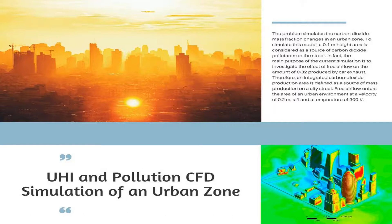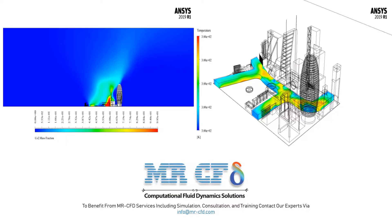Further, we inspect the UHI and pollution CFD simulation of an urban zone. The problem simulates the carbon dioxide mass fraction change in an urban zone. A 0.1 meter height area is considered as a source of carbon dioxide pollutants on the street. The main purpose is to investigate the effect of free airflow on the amount of CO2 produced by car exhaust. An integrated carbon dioxide production area is defined as a source of mass production on a city street. Free airflow enters the urban area at a velocity of 0.2 meters per second and a temperature of 300 K.